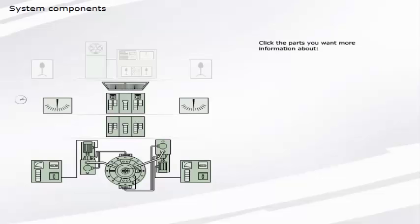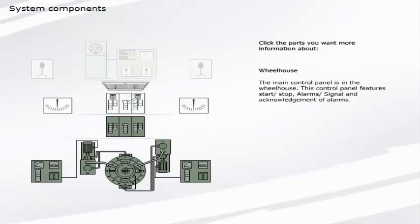Engine control room: signal alarm panel. Steering gear compartment: actuator, power units, port and starboard starter.